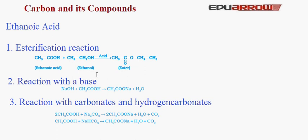Reaction 3 — With carbonates and hydrogen carbonates: ethanoic acid reacts with carbonates and bicarbonates to form sodium ethanoate, water, and carbon dioxide. For example, ethanoic acid reacts with sodium carbonate (Na₂CO₃) to give sodium ethanoate (CH₃COONa), water, and carbon dioxide.